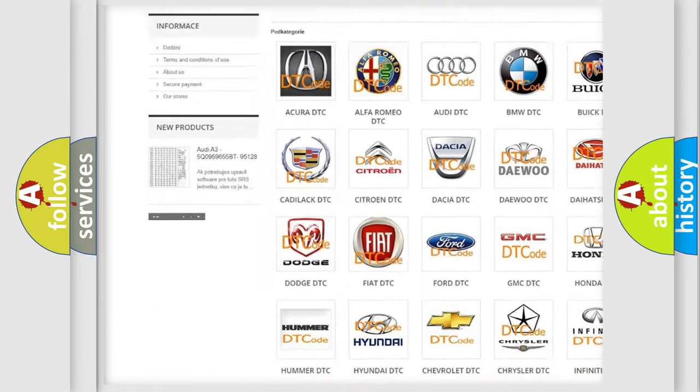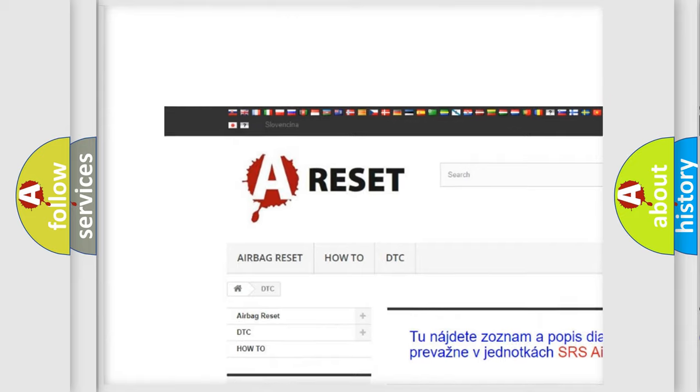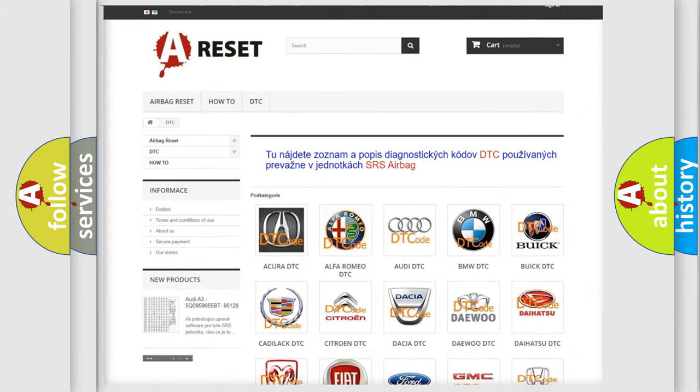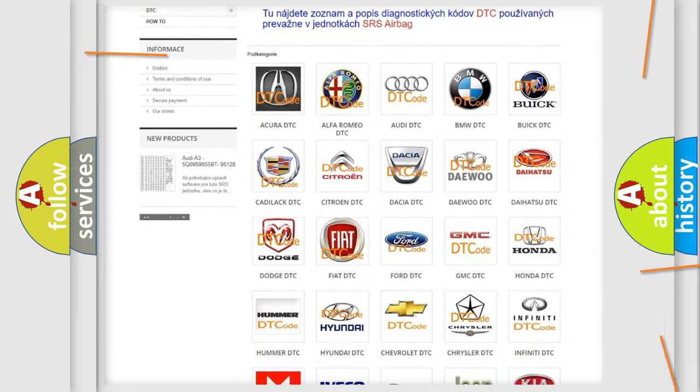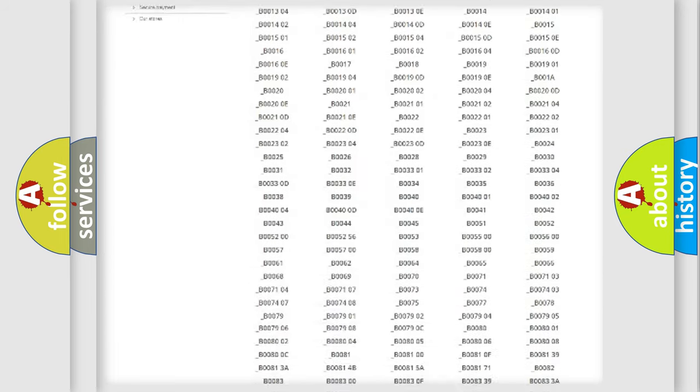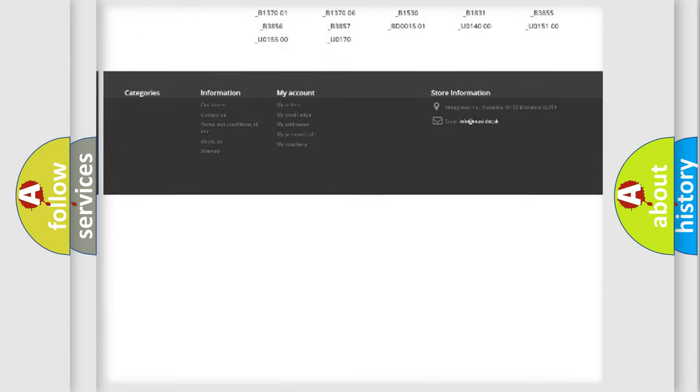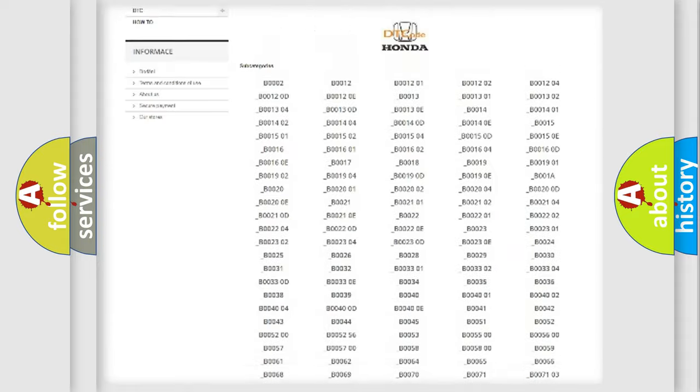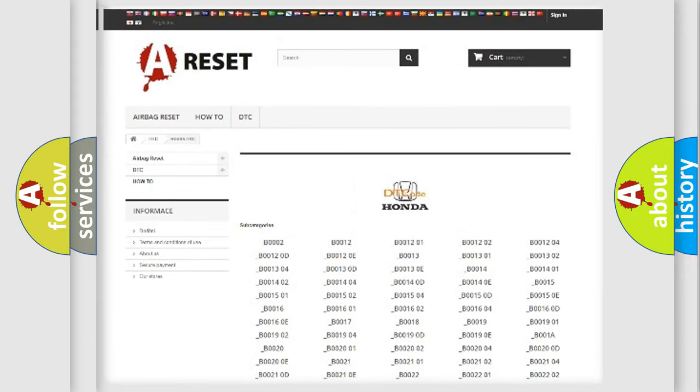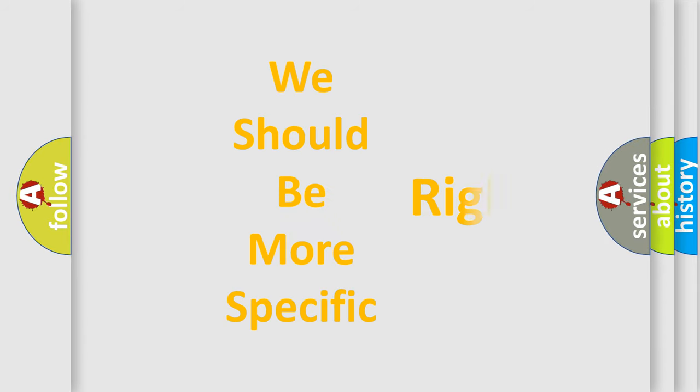Our website airbagreset.sk produces useful videos for you. You do not have to go through the OBD-II protocol anymore to know how to troubleshoot any car breakdown. You will find all the diagnostic codes that can be diagnosed in Honda vehicles, and many other useful things. The following demonstration will help you look into the world of software for car control units.